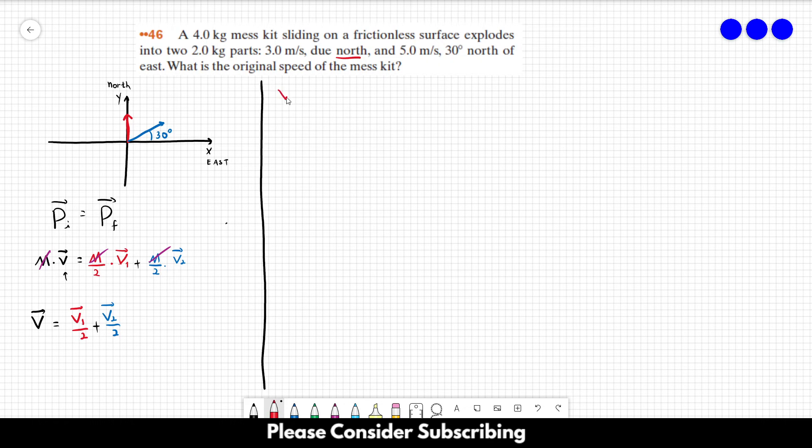So vector v1 is really easy - it points towards the north, so that's just 3 in the j direction, meters per second, that's it.